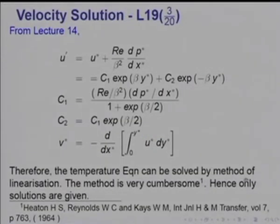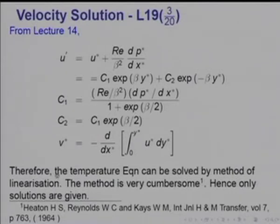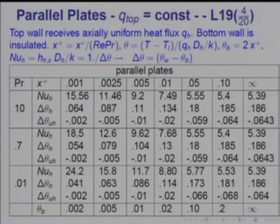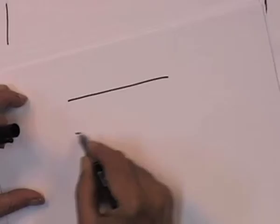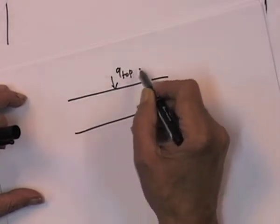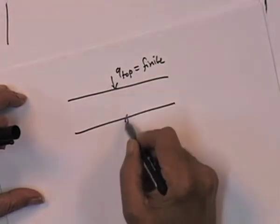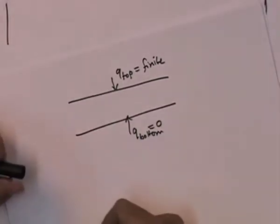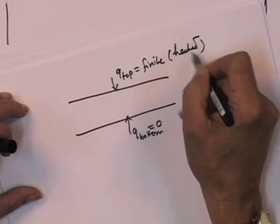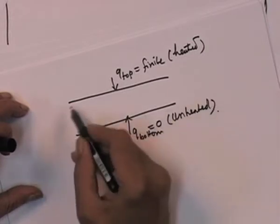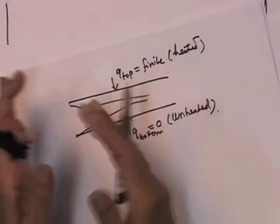Again, the resulting equation can be solved by Langer's method of linearization. However, the algebra turns out to be very, very cumbersome, as you will see from a paper by Heaton, Reynolds, and Case, International Journal of Heat and Mass Transfer, Volume 7, 1964. So the method is very cumbersome and therefore what I am going to do is present only the solution, so that you appreciate what the solutions under simultaneous development look like. I am going to consider the case of flow between two parallel plates, where Q top is finite but Q bottom is zero — this is the heated side and this is unheated. The flow and temperature profiles are now simultaneously developing.